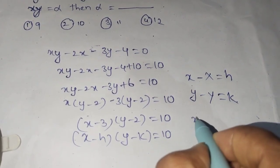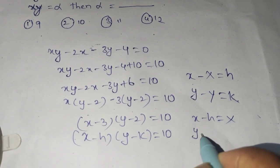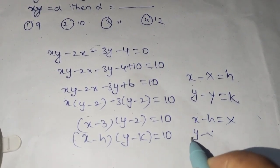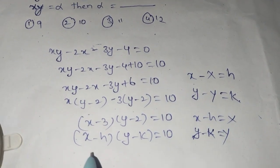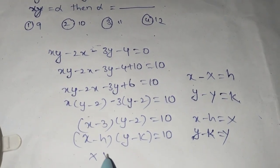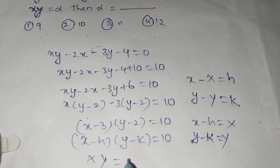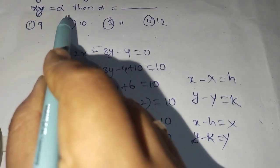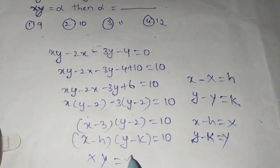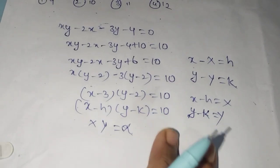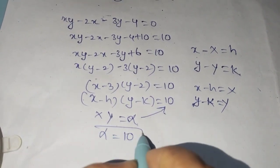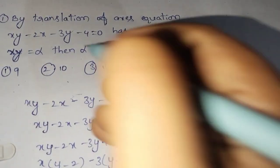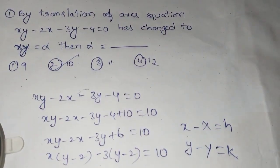So if we take here x minus h equals capital X, y minus k equals capital Y, then it is capital X into capital Y that equals to alpha. In the question they told xy equals alpha. Now what is alpha from this? So alpha is 10. Answer is option 2.